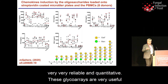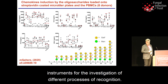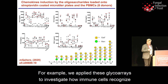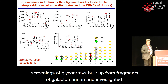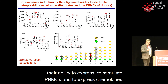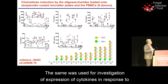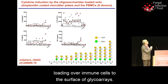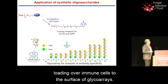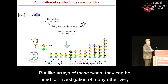These glycoarrays are very useful instruments for investigating different processes of recognition. For example, we applied these glycoarrays to investigate how immune cells recognize different distinct oligosaccharide molecules. We just published screenings of glycoarrays built up from fragments of galactomannan and investigated their ability to stimulate PBMCs and to express chemokines. The same approach was used for investigation of cytokine expression in response to loading of immune cells onto the surface of glycoarrays.